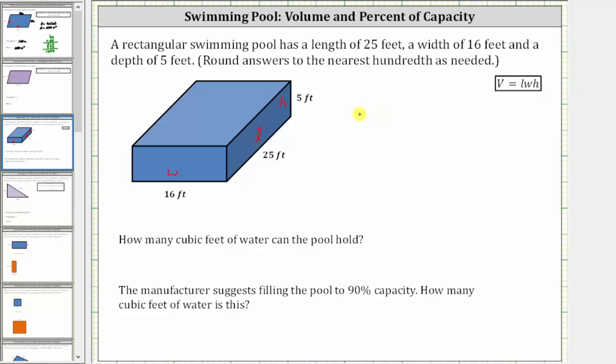So the volume of the pool is equal to 25 feet times 16 feet times 5 feet. I'm multiplying from left to right.